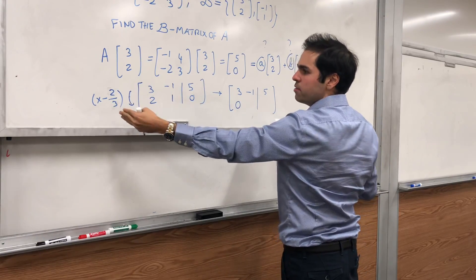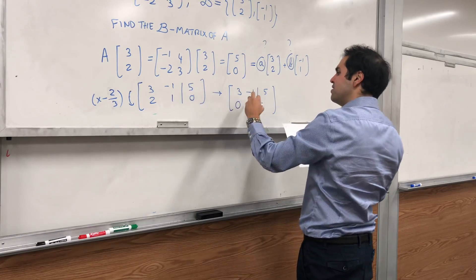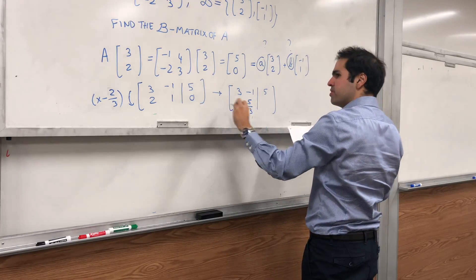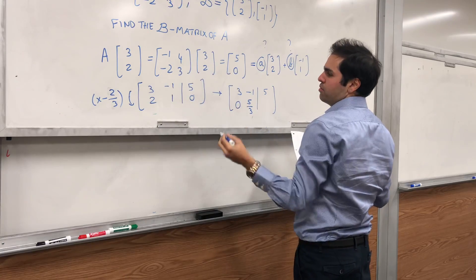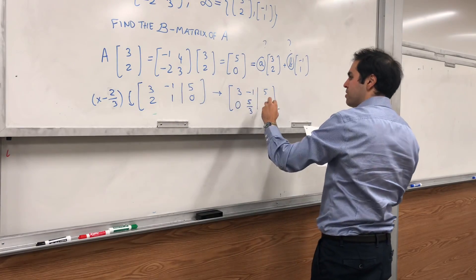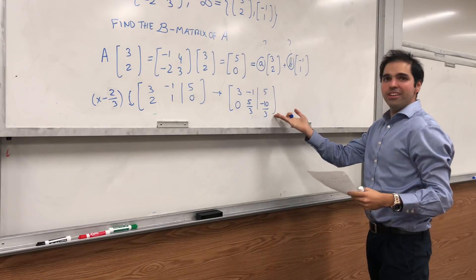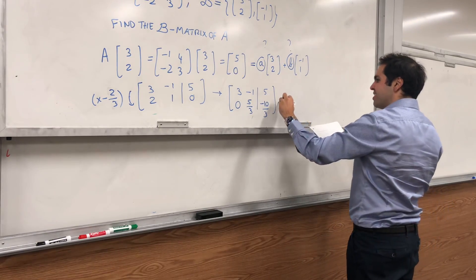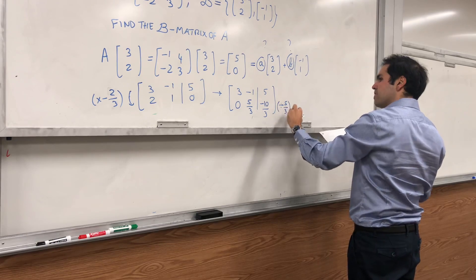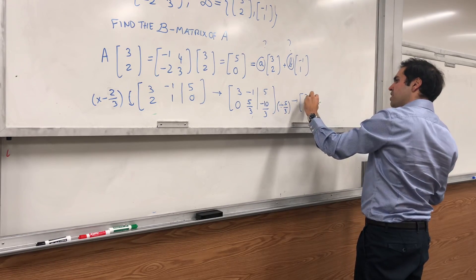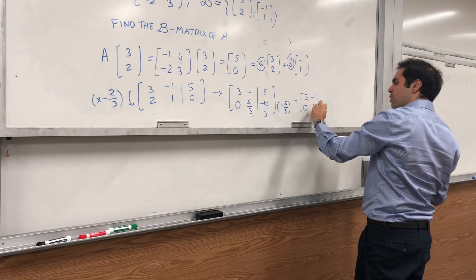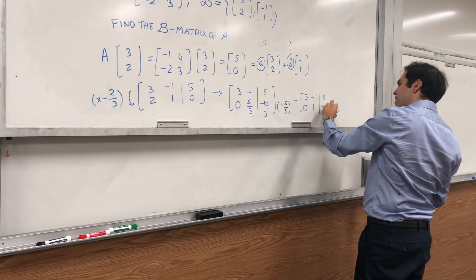-1 times -2/3 is 2/3, plus 1 is 5/3, and then 5 times -2/3 is -10/3, plus 0 is -10/3. But notice, this simplifies quite nicely. You can divide by 5/3 and you get [3, -1; 0, 1 | 5, -2].